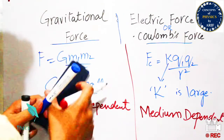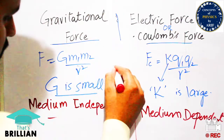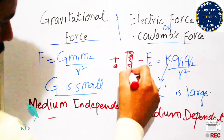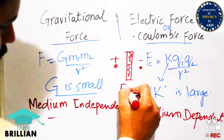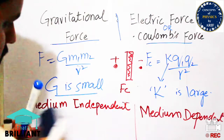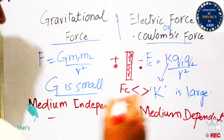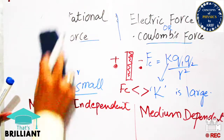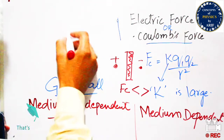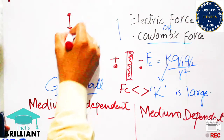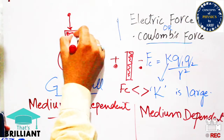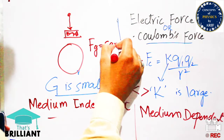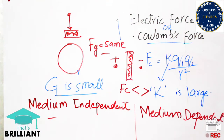The electric force is medium dependent, meaning that when any medium — such as a sheet of paper, plastic, or wood — is placed between two charges, the strength of the electric field or electric field intensity either reduces or increases depending on the nature of the medium or material. The electric or Coulomb force between two charges may increase or decrease accordingly. In contrast, the gravitational pull of the earth is universal to all objects, irrespective of the medium between the earth and the object.